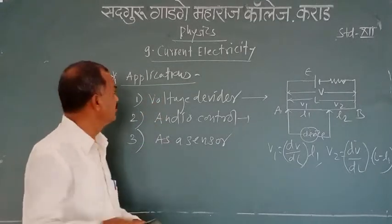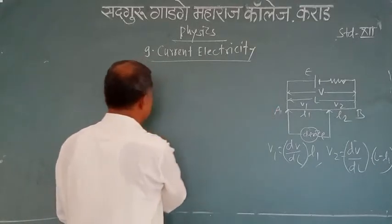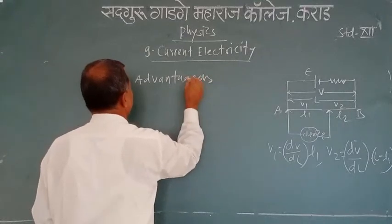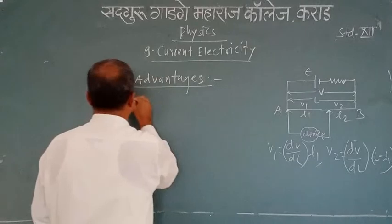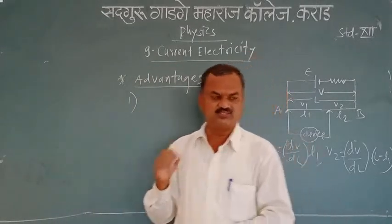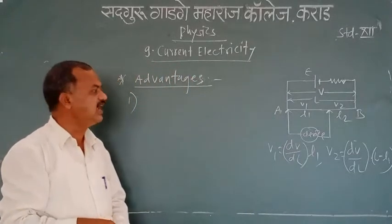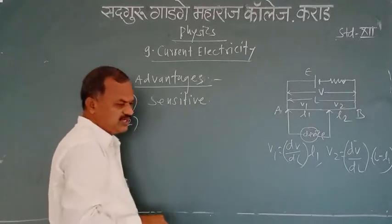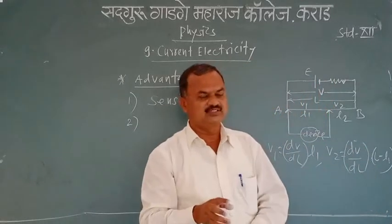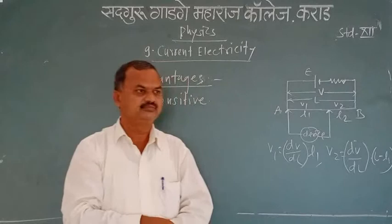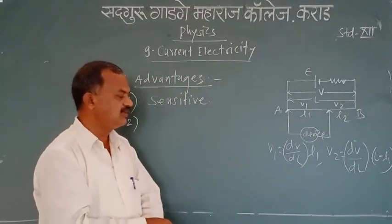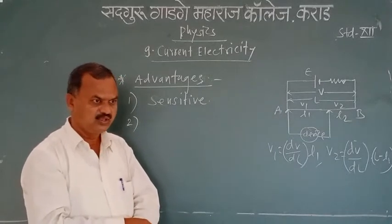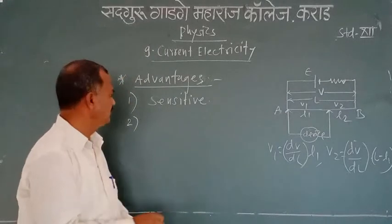These are the practical applications of the potentiometer. Next, the advantages of the potentiometer over the voltmeter. First, the potentiometer is more sensitive than the voltmeter. Second, the potentiometer can be used to measure both potential difference and the EMF of given cells. But the voltmeter is used only to measure potential difference, because the voltmeter draws some current through it. So the potentiometer is more useful than the voltmeter.